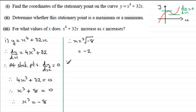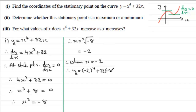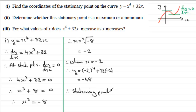Now we find the corresponding y value when x equals minus 2. Substituting into the original equation: y equals minus 2 to the power 4 plus 32 times minus 2, which gives 16 minus 64 equals minus 48. So the stationary point is at (minus 2, minus 48).